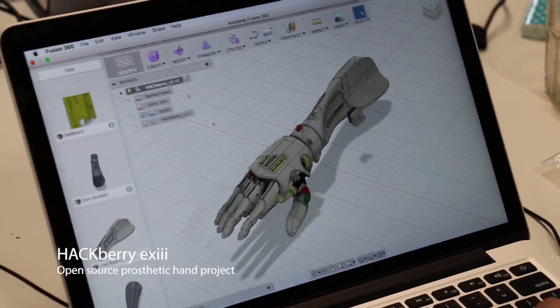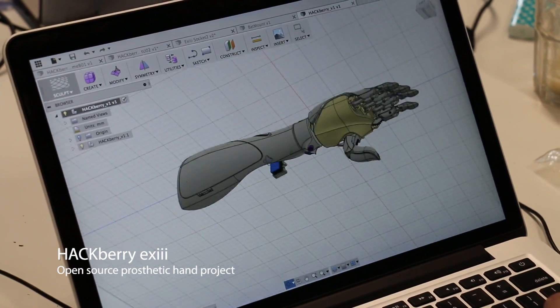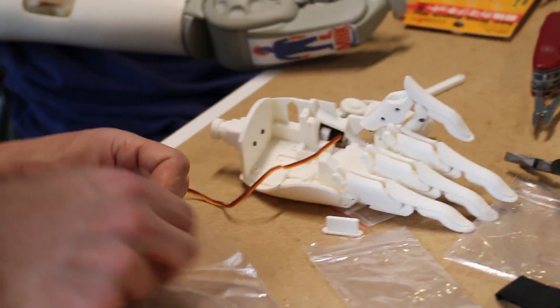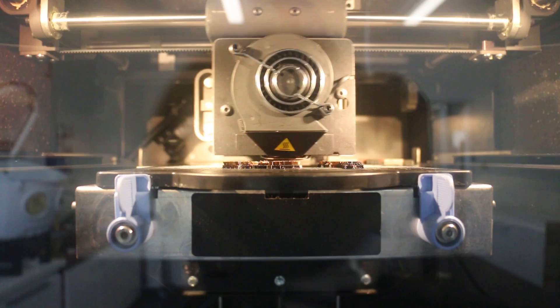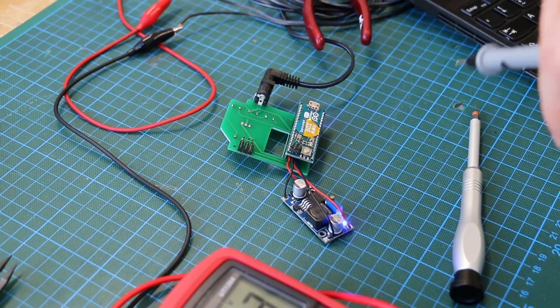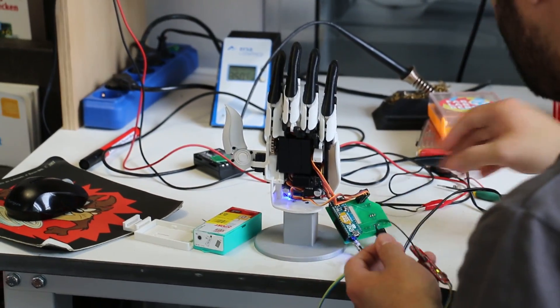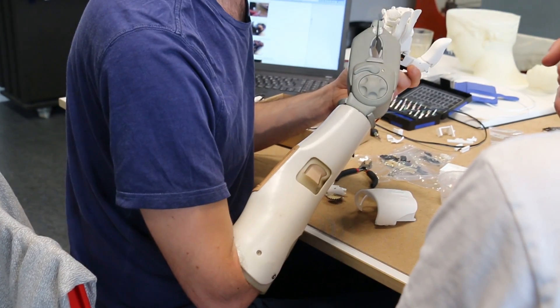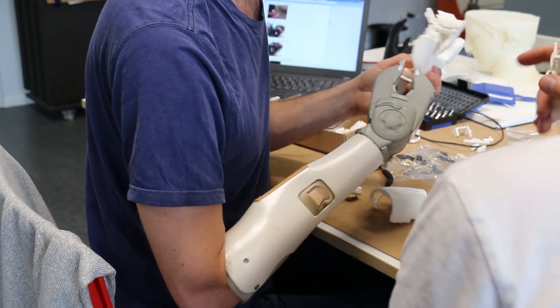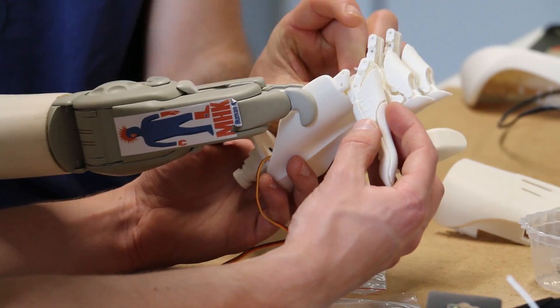There are few open-source prosthetic projects in the world and we decided to try to make the Hagberry. We downloaded the files to 3D print the hand and ordered the electronic components to assemble everything together. We decided to make the first hand adjusted on my personal socket with professional battery and muscle sensors to focus on the reliability of the hand.